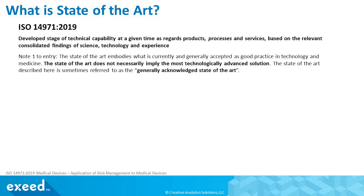Let's look at the definition, a few examples, and three key points important for this term. ISO 14971 defines state-of-the-art as the developed stage of technical capability at a given time as regards products, processes, and services based on the relevant consolidated findings of science, technology, and experience. An important clarification note states that the state-of-the-art embodies what is currently and generally accepted as good practice in technology and medicine, and it does not necessarily imply the most technologically advanced solution. It is sometimes referred to as the generally acknowledged state-of-the-art.